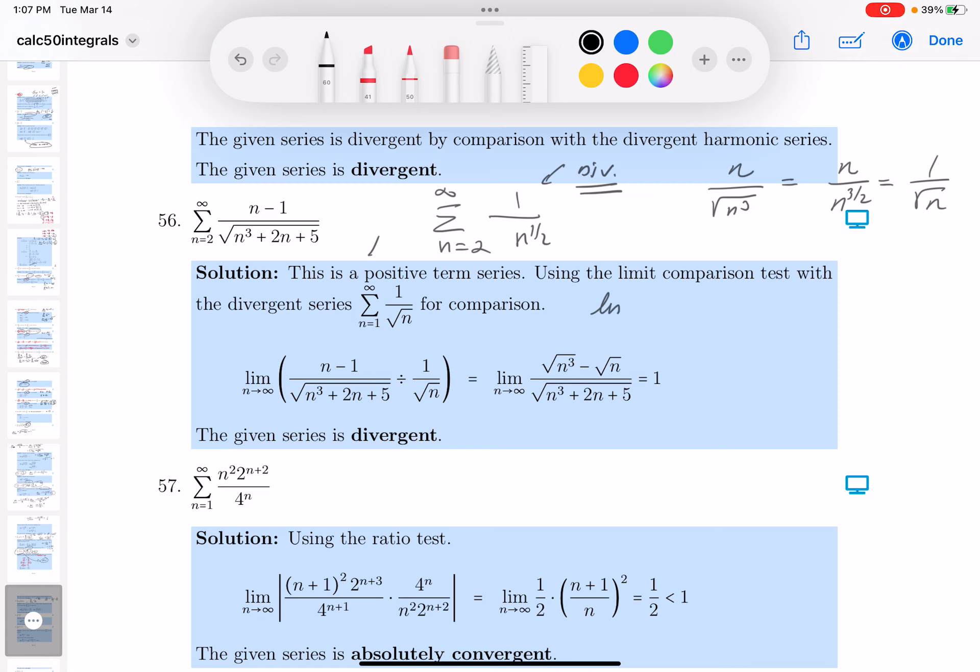I'm going to write down limit as n goes towards infinity, and I'm going to write down n minus 1, and that's going to be the root of n cubed plus 2n plus 5, and what are we doing? We're dividing by 1 over root n, which is like multiplying by root n.